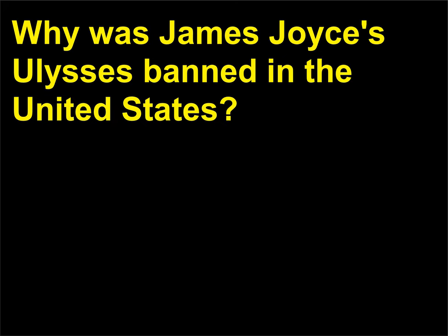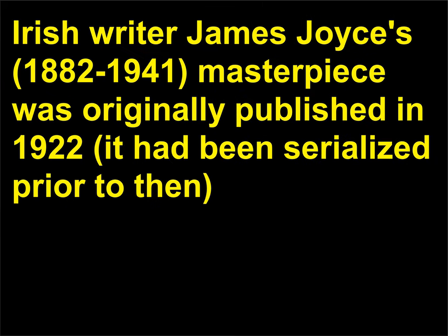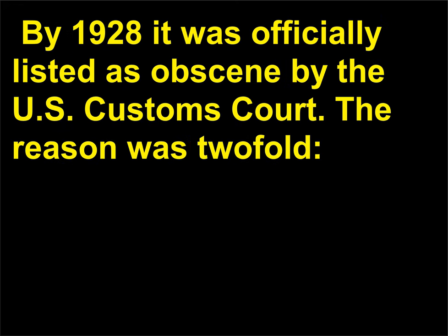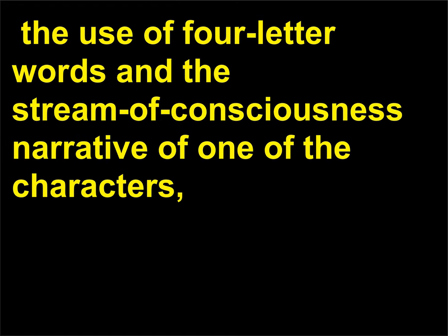Why was James Joyce's Ulysses banned in the United States? Irish writer James Joyce's, 1882–1941, masterpiece was originally published in 1922 — it had been serialized prior to then by the Paris bookstore Shakespeare and Company. By 1928 it was officially listed as obscene by the U.S. Customs Court. The reason was twofold: the use of four-letter words and the stream of consciousness narrative of one of the characters, revealing her innermost thoughts.